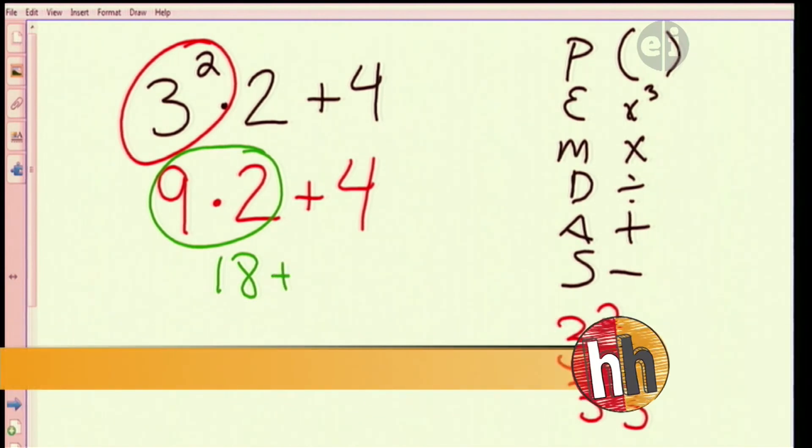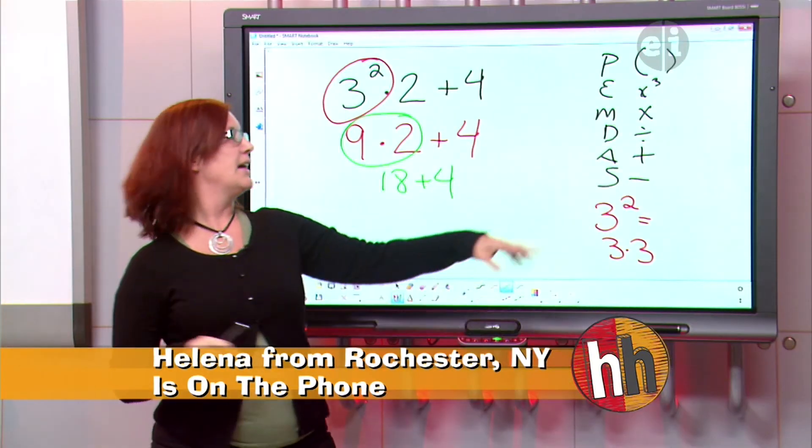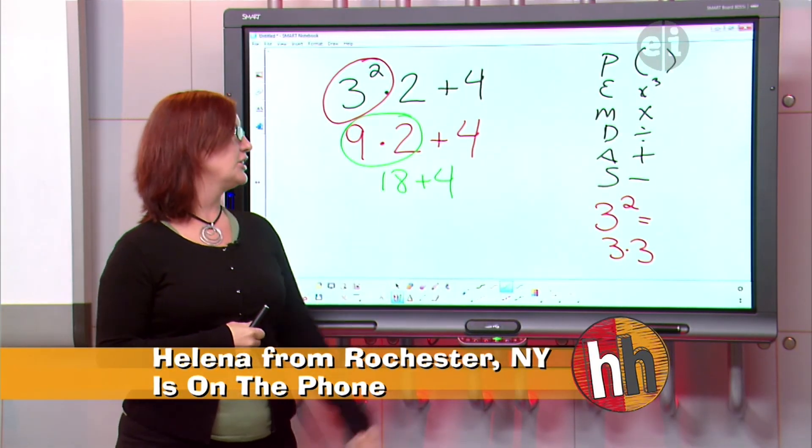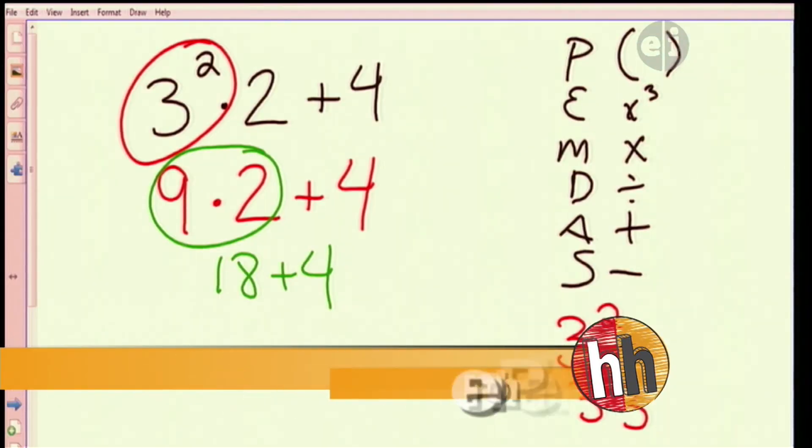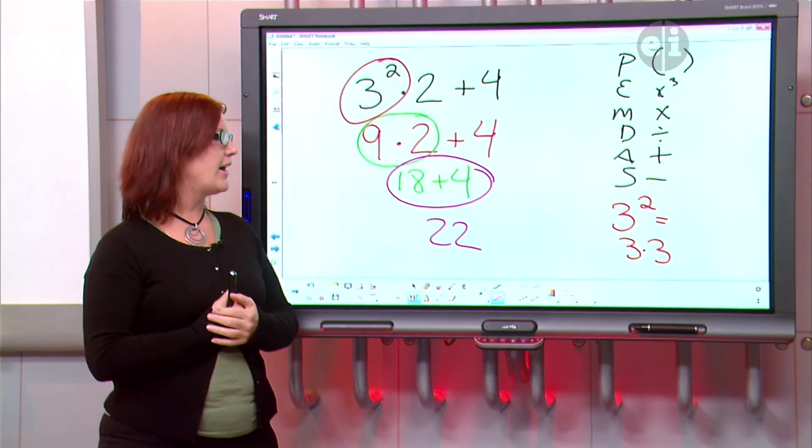And I'm gonna bring down the plus and I'm gonna drop down the four. Any more multiplication and division? Nope. No. Any addition or subtraction? Addition. We have addition, so we're gonna do 18 plus 4. And what is 18 plus 4? 22. 22.